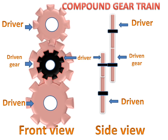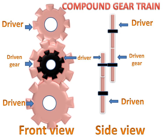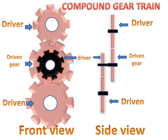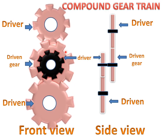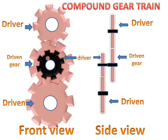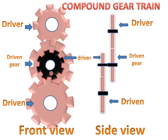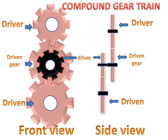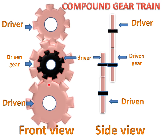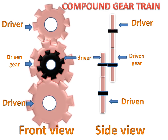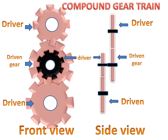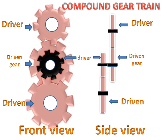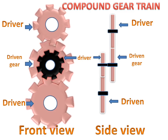When the driver rotates, it will rotate the driven gear. This driven gear will rotate the next driver, and that driver gear will rotate its driven gear. So this is the working of the compound gear train. Thank you.